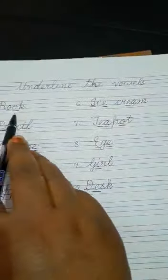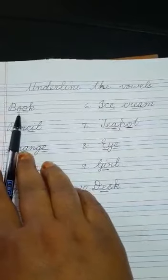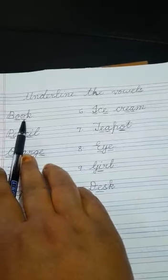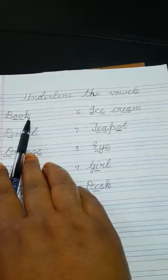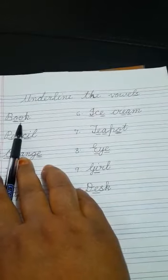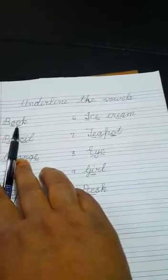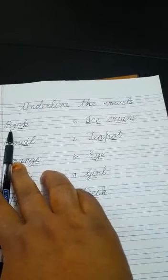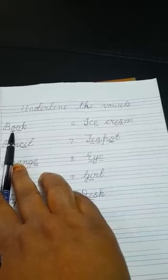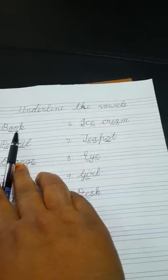Now first word is book. That is B, O, O, K. So what are the vowels here? O and O, double O. So we will underline O here. So first O and the second O.